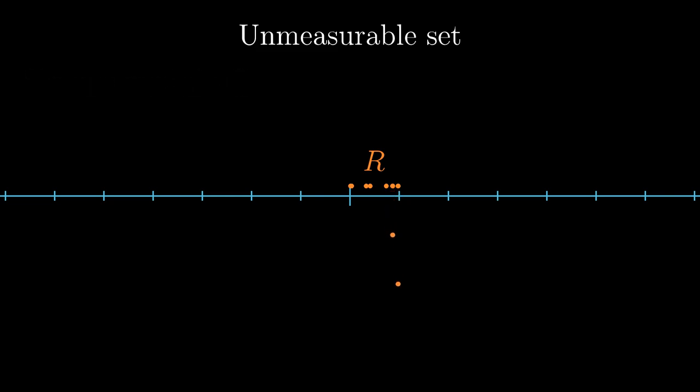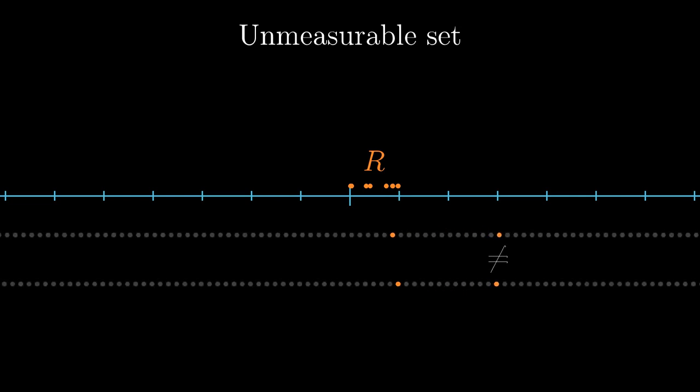So, whenever we take two elements of r and shift them by a rational number, we never hit the same real number because both elements come from different groups.